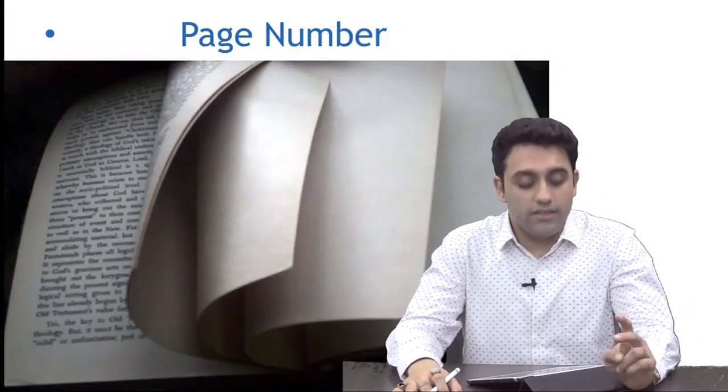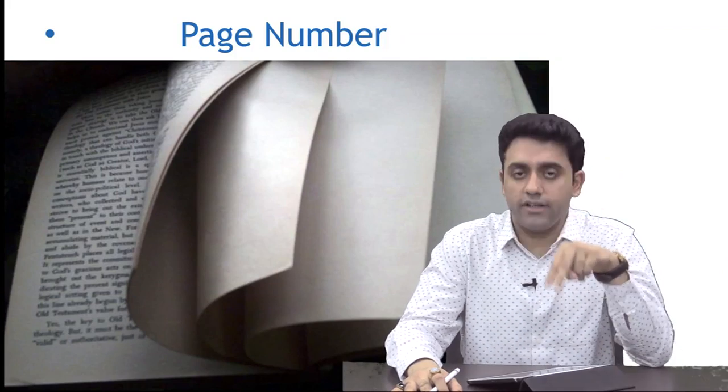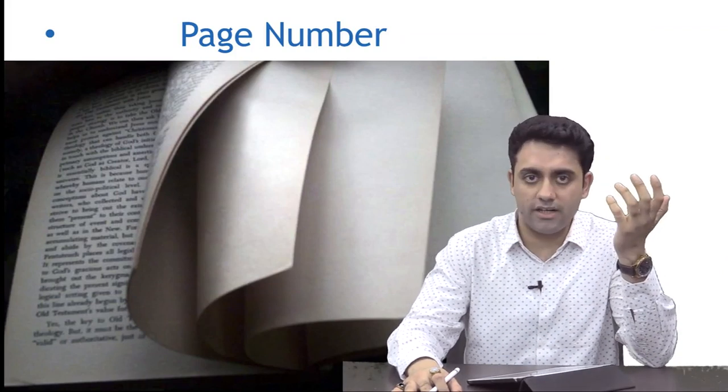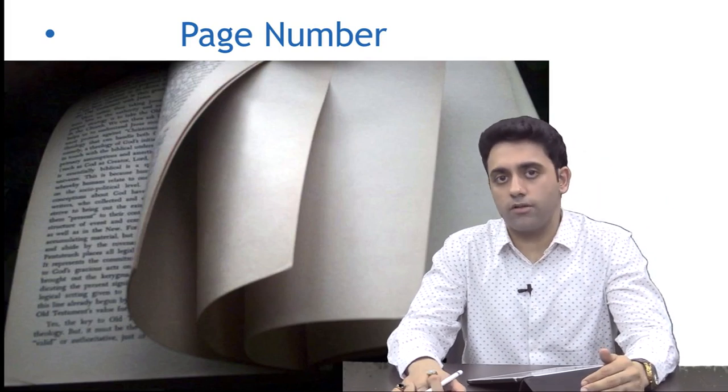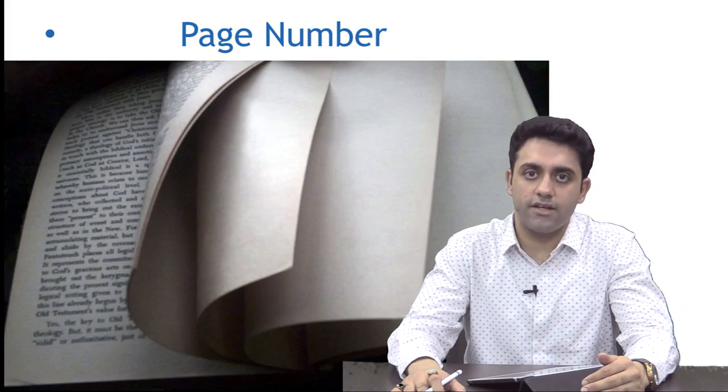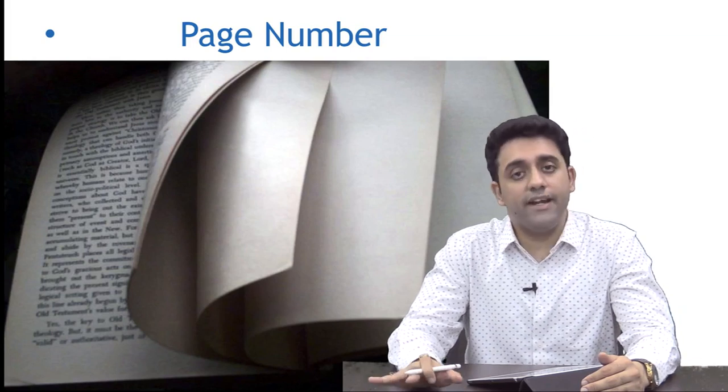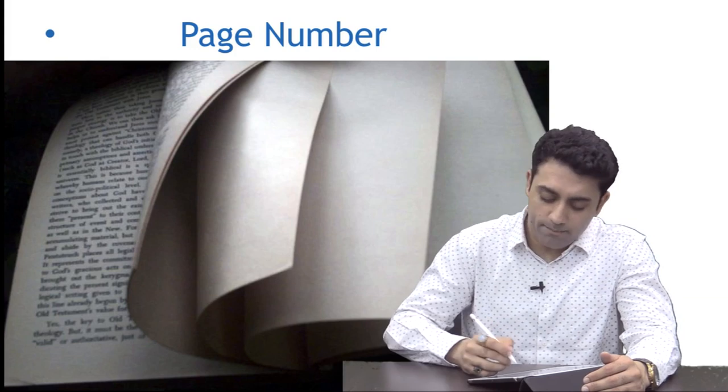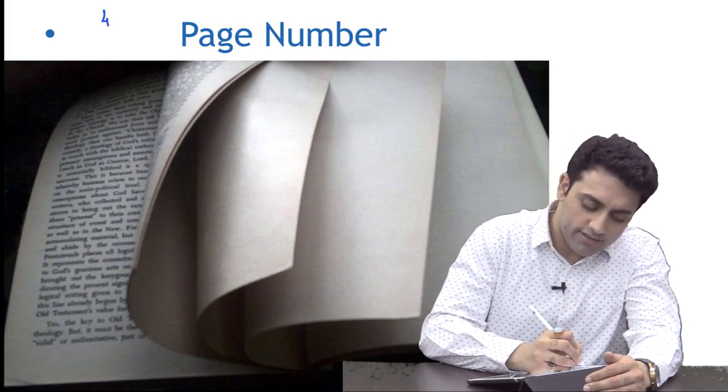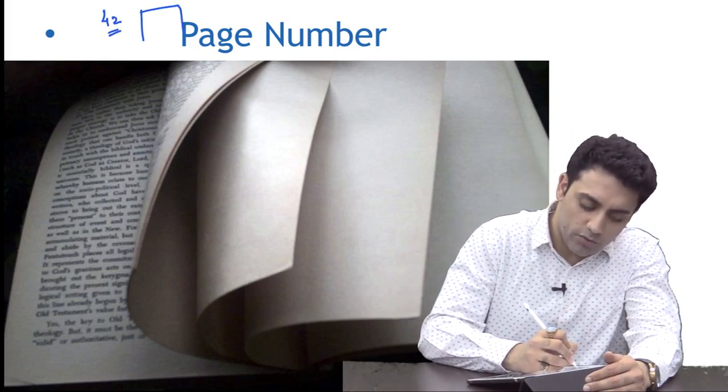Point number two is page number. If you have a book which is of 500 pages, while reading the book you felt that page number 42 is very important because it has a flow chart of the differential diagnosis of microcytic hypochromic anemia.